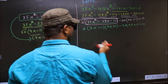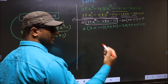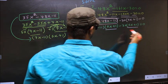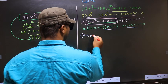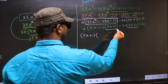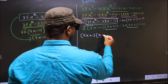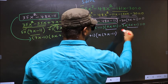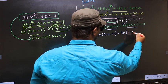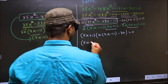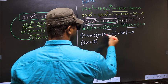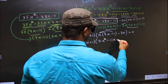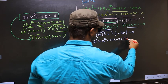From the entire equation, what can be taken out common is (5x plus 1). So (5x plus 1) outside, and we are left with x times (7x minus 11) minus 30 equal to 0. Opening the brackets gives 7x² minus 11x minus 30 equal to 0.